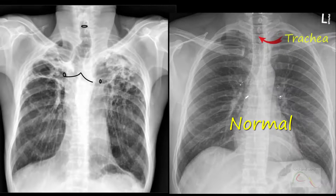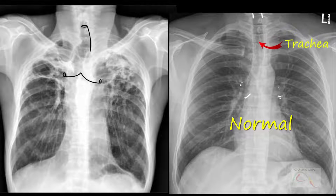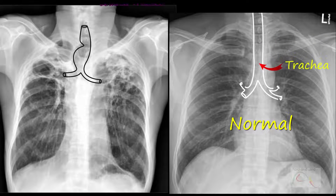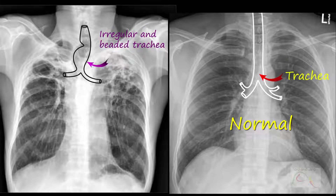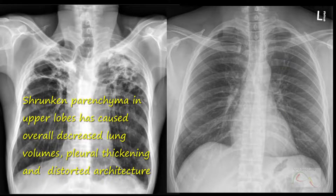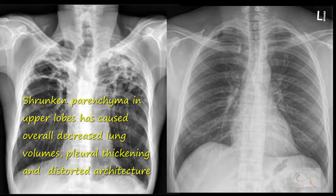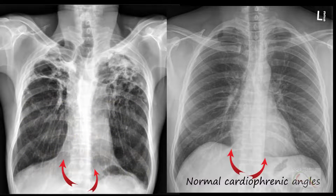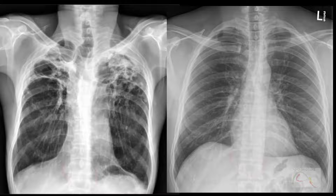You can see an irregular and a somewhat beaded-shaped trachea. There is a tracheal deviation towards the right side. Healed parenchyma in both upper zones is shrunken, which has resulted in distorted architecture of the lungs. Cardiophrenic angles have lost their usual shapes as a result of fibrosis in the upper zones and the retraction of the rest of the lungs.